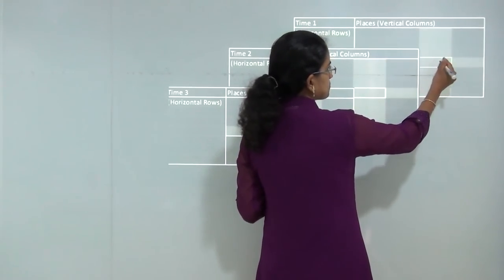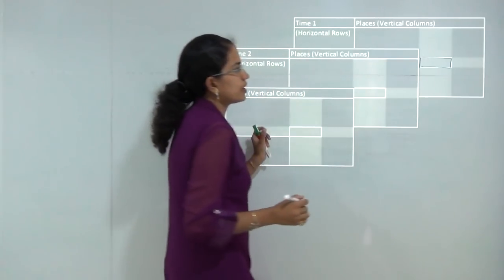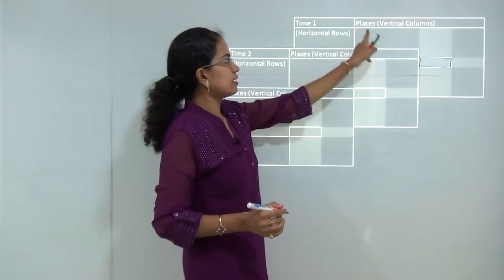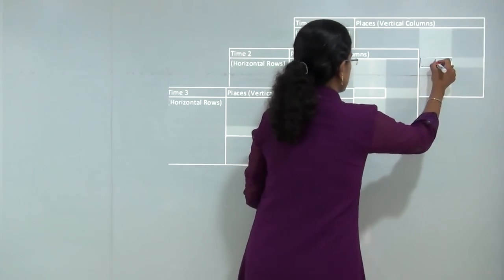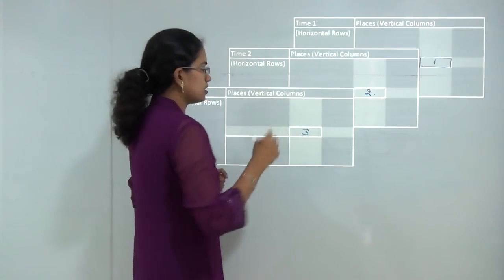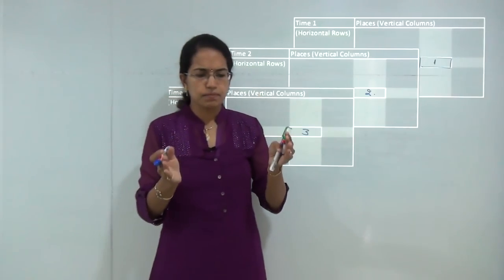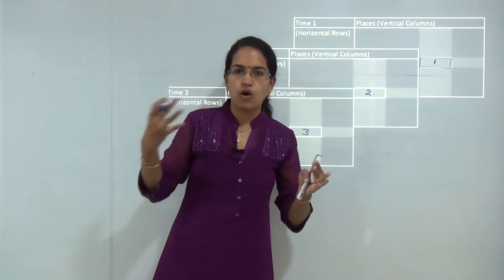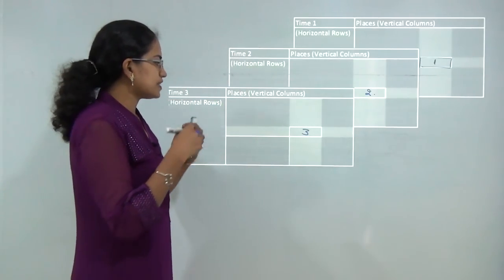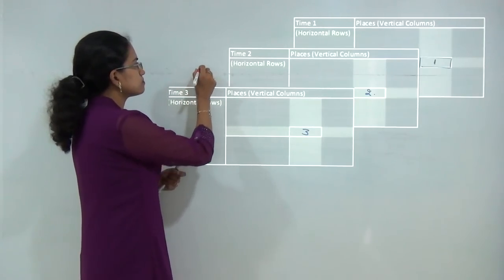If I take this region over different time frames, I can say over time 1 this was the case, over time 2 this was the case, and over time 3 this was the case. A very simple example would be: how does that same patch of land evolve over various years?